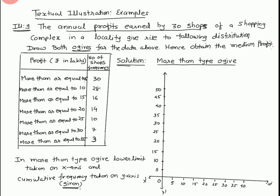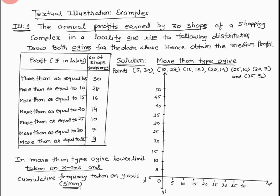First we draw the more than type ogive. The lower limit is taken on the x-axis. For more than type, points are lower limit paired with cumulative frequency. The points are: lower limit 5, frequency 30; lower limit 10, frequency 28; lower limit 15, frequency 16; lower limit 20, frequency 14; lower limit 25, frequency 10; lower limit 30, frequency 7; lower limit 35, frequency 3.